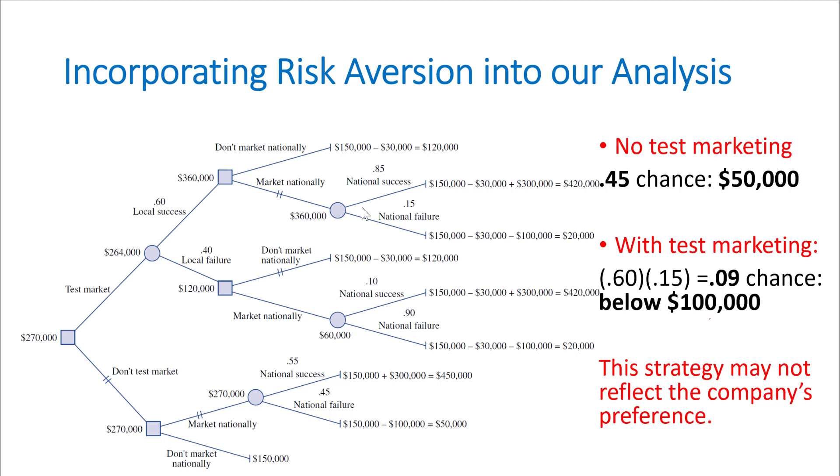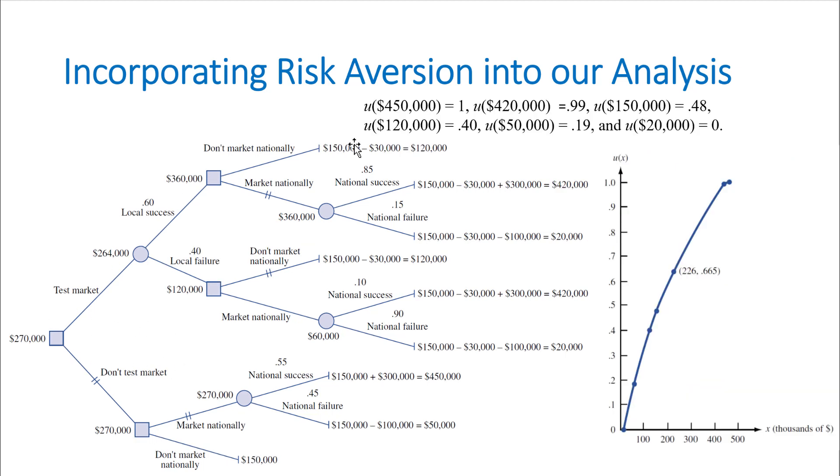So we want to incorporate the utility function of the company to account for that as well. Here you see the decision tree again with the utility function of the company. All these rewards here are marked on the utility function, so we know what is the utility of $150,000, $50,000, $450,000, and so forth.